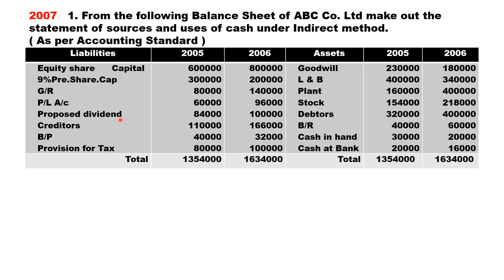For proposed dividend, you need to make an account because there is an adjustment number two. If there is no adjustment, you can treat it as a current liability. Creditors come under operating activity as a current liability — there is an increase of fifty-six thousand. Whenever current liability increases, you should add it.